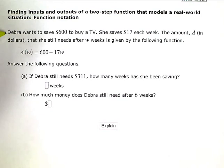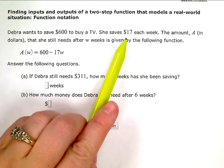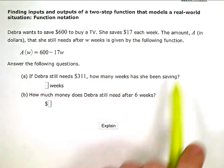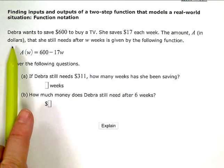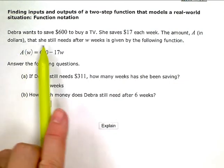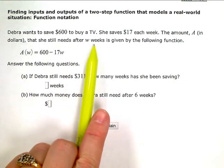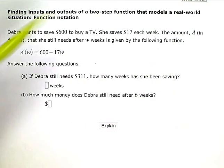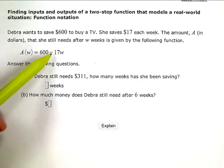So here's my story, or my context. Deborah wants to save $600 to buy a TV. She saves $17 each week. The amount A, in terms of dollars, A for amount, that she still needs after w weeks is given by the following function. So the amount with respect to the number of weeks, or A of w, is equal to $600 minus $17w.